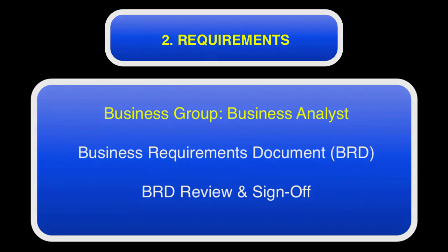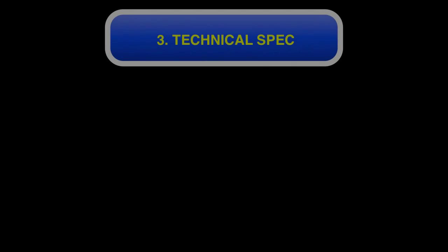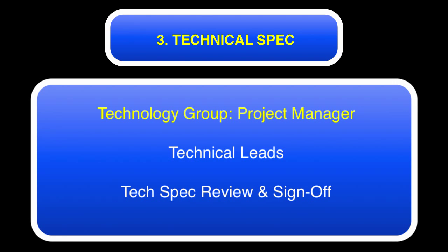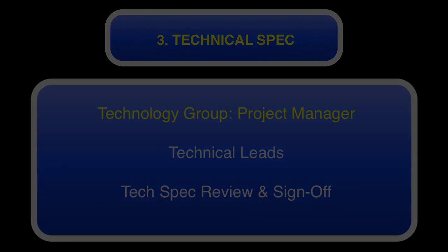The next step is the technical spec. The project manager takes that BRD and translates it into a technical spec, and also names members of the development team. Each system area has to name a technical lead. They're going to attend all meetings, involve other members of their groups as necessary, and write technical specs for their systems. The project manager then combines all those requirements into one tech spec. Then there's a tech spec review and sign-off meeting with all stakeholders.